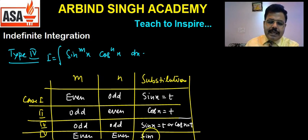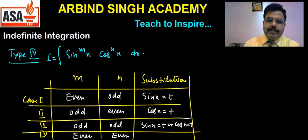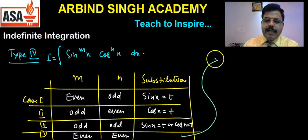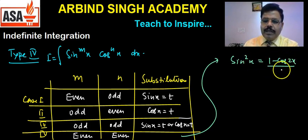अगर दोनों ही even हो तो एक particular substitution put करनी चाहिए। sin square x के बदले 1 minus cos 2x by 2 put करना चाहिए।